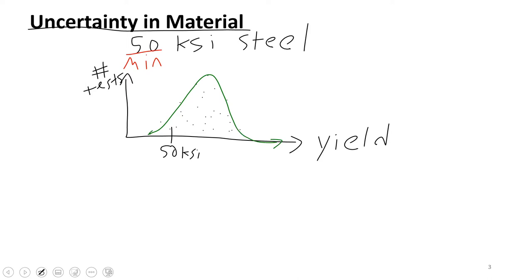This is a statistics game. Engineers deal with things that actually exist in the real world, and if you're making something physical, you can't make it have exactly 50 KSI even if you're completely controlling the chemistry. When you see a stamp on a piece of steel that says 50 KSI, that is a minimum rating. Steel mills design their processes to aim for a minimum of 50 and err on the side of greater than 50. So if you tested many samples, the average might be something like 58 KSI, with values ranging from perhaps 48 to 80 KSI on the high end.